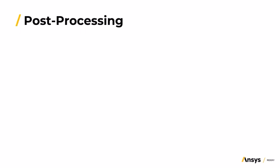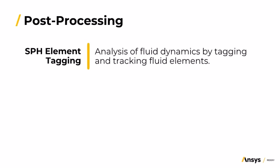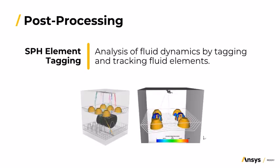When it comes to post-processing capabilities, we have a couple of ANSYS Rocky examples. In element tagging, you can analyze the fluid dynamics in critical areas of interest by tagging and tracking elements. In this dishwasher simulation, SPH element tagging is used to optimize the spray arm nozzle design, and the shear stresses analysis offers a detailed assessment of cleaning performance.